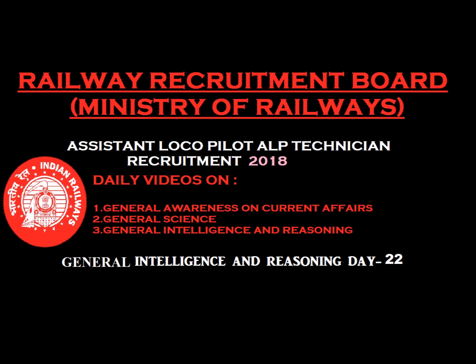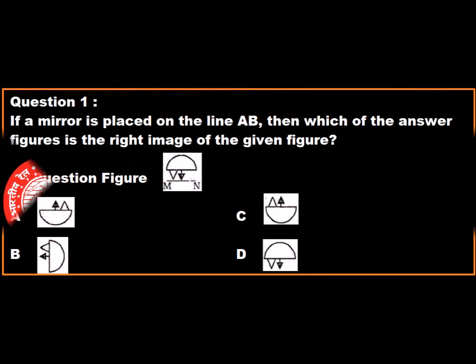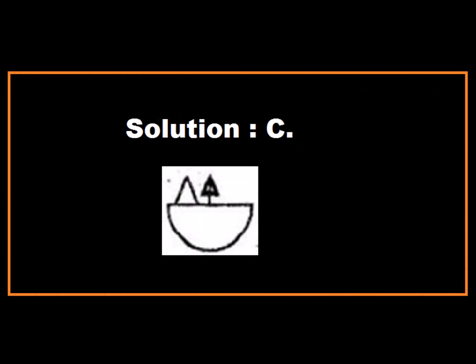General Intelligence and Reasoning Day 22. Question 1: If a mirror is placed on the line AB, then which of the answer figures is the right image of the given figure? Option C is correct. Hence, Option C is the correct response.